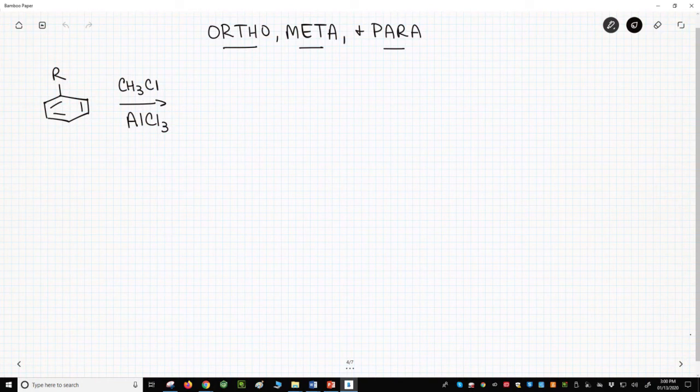In the upper left, we have a molecule, a benzene ring with an R group, and it is reacting with chloromethane and aluminum trichloride. This is a Friedel-Crafts alkylation.